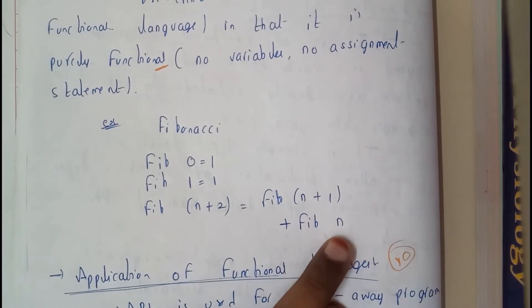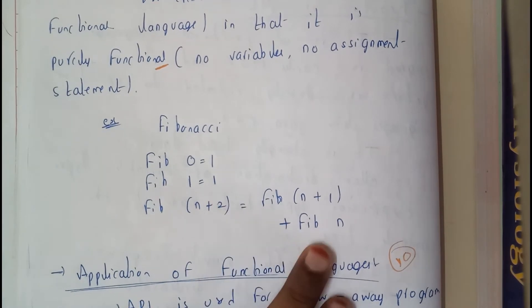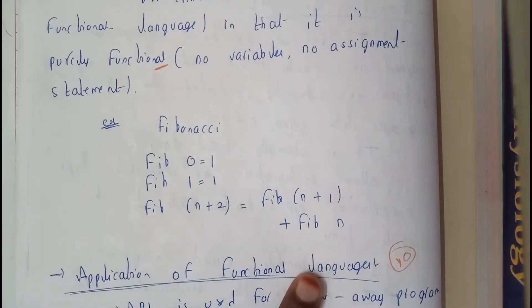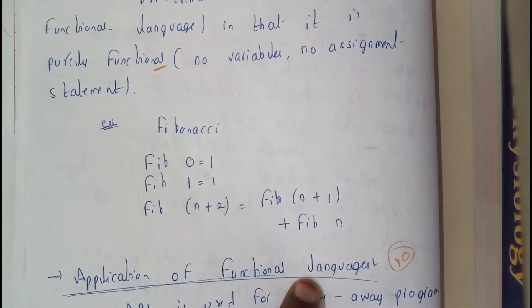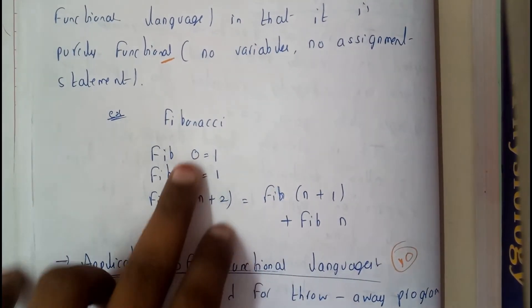So you will be getting the results of Fibonacci: 0, 1, 2, 3, 4, 5, 6, 7, 8, 9, 10. You can substitute the values and get the results. So if you substitute the value...